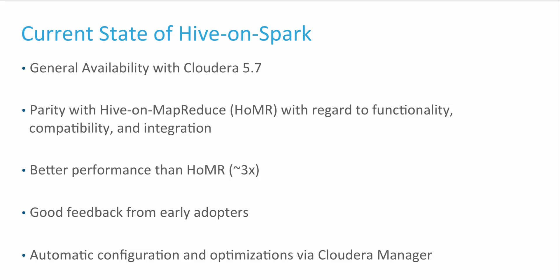In CDH 5.7, Hive on Spark will become what we call Generally Available, which means it's production-ready and is fully supported within CDH. In this release, Hive on Spark has achieved parity with Hive on MapReduce with regard to functionality, compatibility, as well as integration with other components within the Cloudera platform. So Hive on MapReduce can almost seamlessly be replaced by Hive on Spark. Please refer to our docs and release notes for more details.